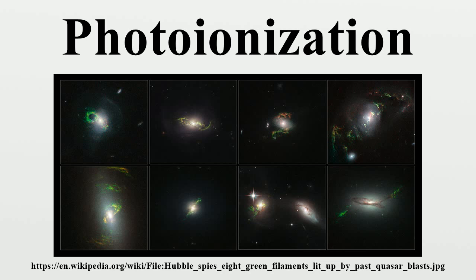Above threshold ionization is an extension of multi-photon ionization where even more photons are absorbed than actually would be necessary to ionize the atom. The excess energy gives the released electron higher kinetic energy than the usual case just above the threshold ionization. More precisely, the system will have multiple peaks in its photo-electron spectrum which are separated by the photon energies, indicating that the emitted electron has more kinetic energy than in the normal ionization case. The electrons released from the target will have approximately an integer number of photon energies more kinetic energy.